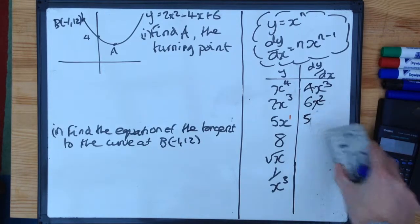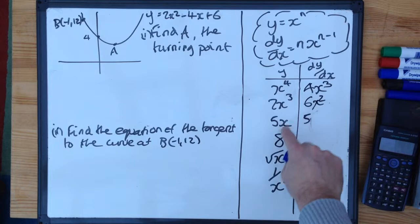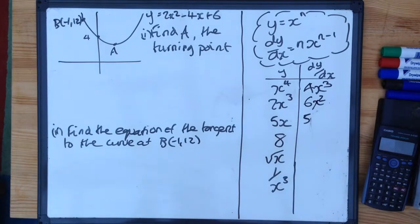So, in general, if you've got something with just an x in it, it differentiates to give the coefficient. So 10x differentiates to 10, 3x to 3, minus 6x to minus 6.